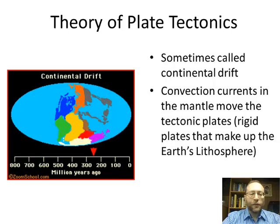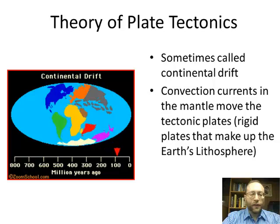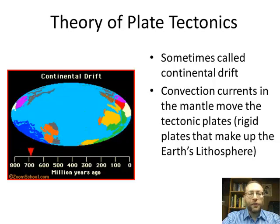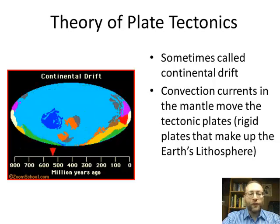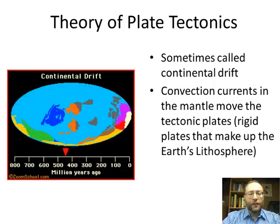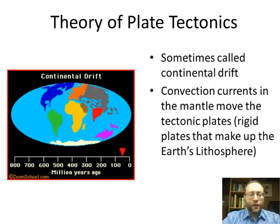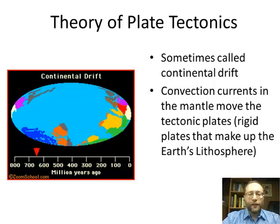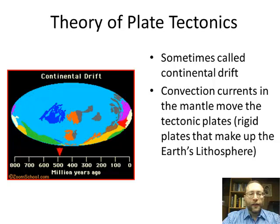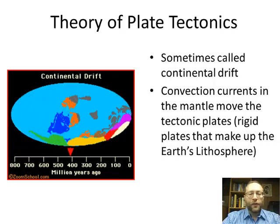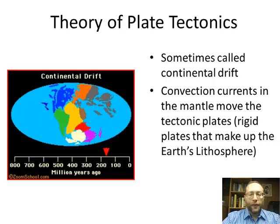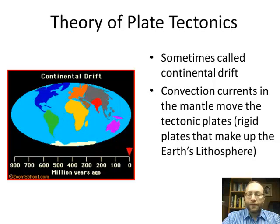This is sometimes called continental drift because the continents move or seem to drift. Actually, it's not just the continents — the oceanic crust is also drifting. You just can't see it because the oceanic crust is under water. These parts together are called tectonic plates. They are rigid plates and comprise both the crust and the uppermost layer of the mantle, called the rigid mantle.